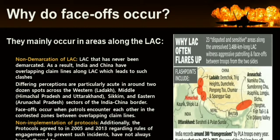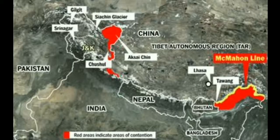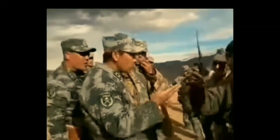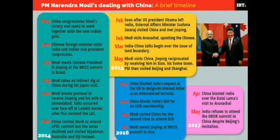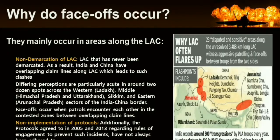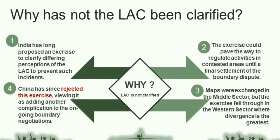Why do face-offs occur? They mainly occur in areas along the LAC. The LAC has never been demarcated; as a result, India and China have overlapping claim lines along the LAC, which leads to such clashes. Differing perceptions are particularly acute in around two dozen spots across the western region (Ladakh), middle region (Himachal Pradesh and Uttarakhand), Sikkim, and the eastern region (Arunachal Pradesh). Face-offs occur when patrols encounter each other in contested zones between overlapping claim lines.